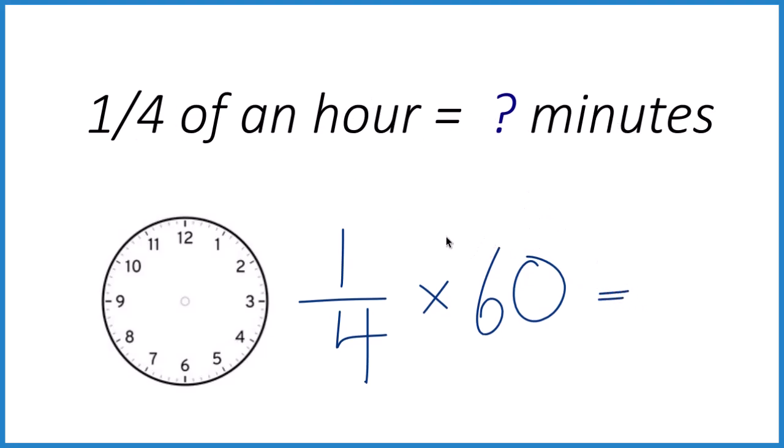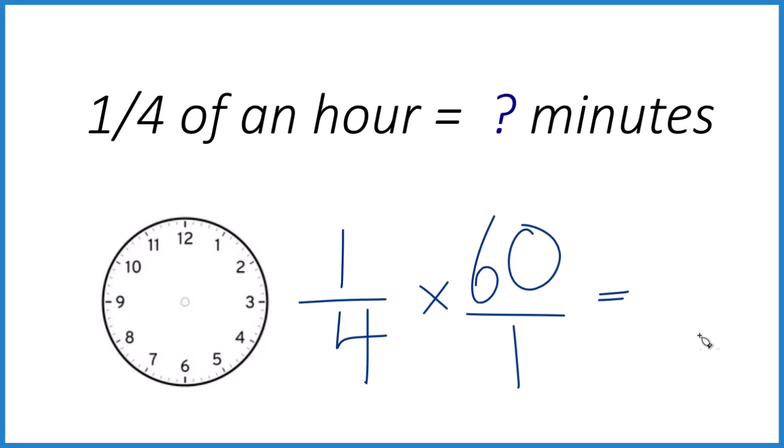But instead of 60, let's do this. Let's move this up here and call it 60 over 1. That way the numerators and the denominators, they line up, makes the math a little easier.